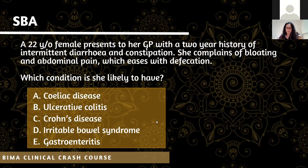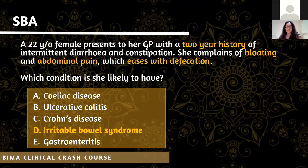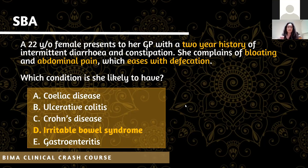Next SBA: the correct answer is irritable bowel syndrome. It's a long two-year history - not sudden like gastroenteritis. There's intermittent diarrhoea and constipation, bloating, abdominal pain, and the abdominal pain eases with defecation. That's a very specific phrase for IBS. If you see abdominal pain that is better after going to the toilet, you're thinking IBS.